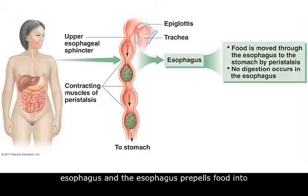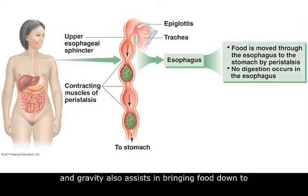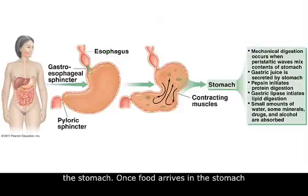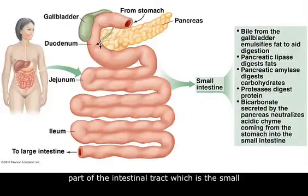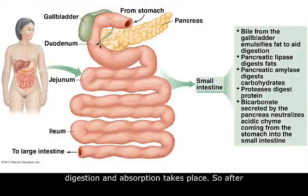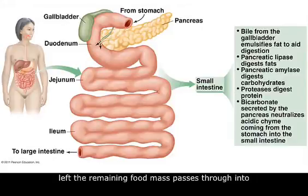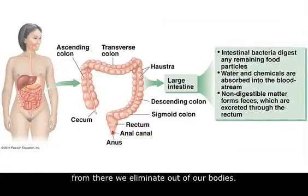The esophagus propels food into our stomach through a process called peristalsis, and gravity also assists in bringing food down. Once food arrives in the stomach, it's mixed up — there's a small amount of digestion that occurs there. The stomach stores food for a limited period of time so it can release it in small amounts into the small intestine, which is really where most digestion and absorption take place. After that extensive process, whatever's left passes through into the large intestine, and then anything remaining is eliminated out of our bodies.